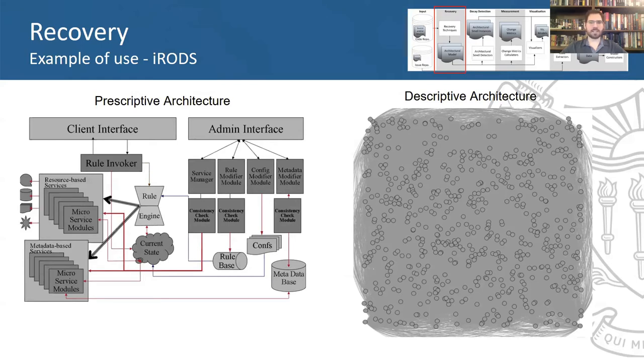As an example, we have the prescriptive and descriptive architectures of iRODS, an open source data management software. As you can see, the prescriptive architecture is clear-cut, concise, and might be helpful in understanding the intentions of the architect. However, it does not represent the actual implementation of the system.